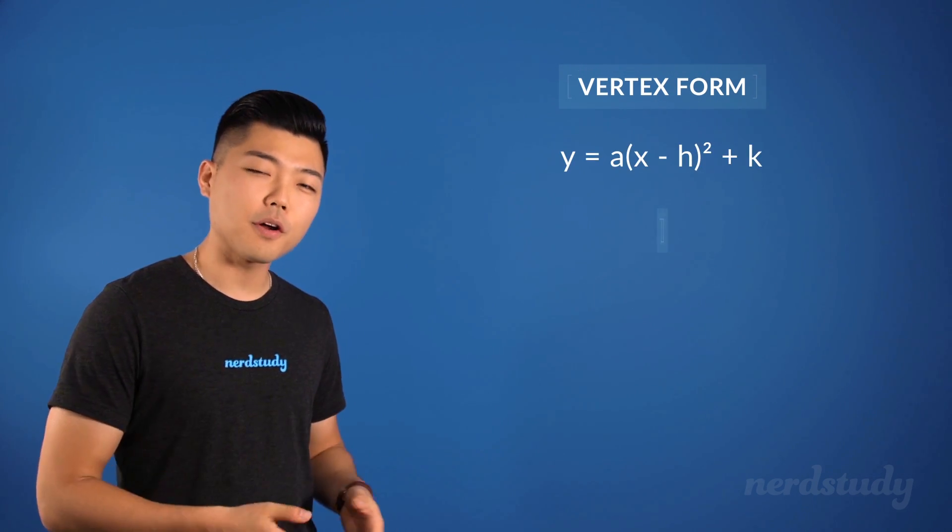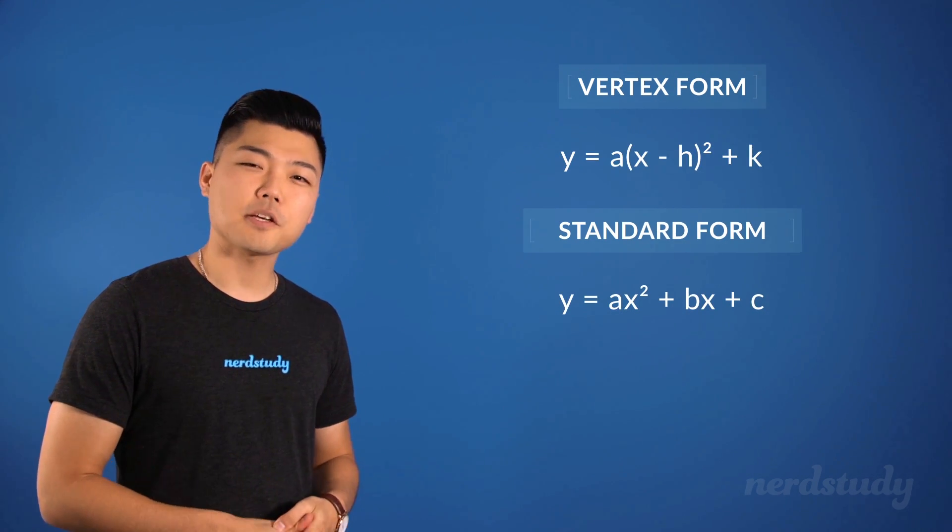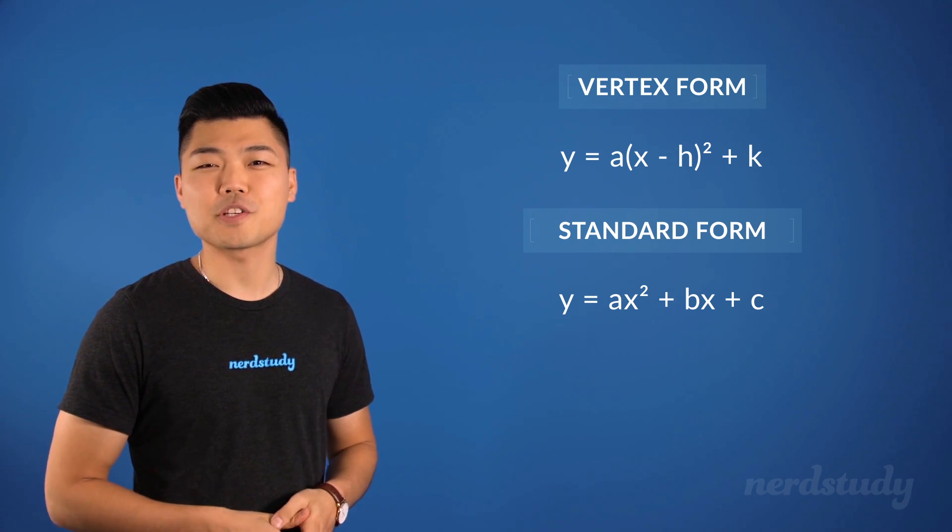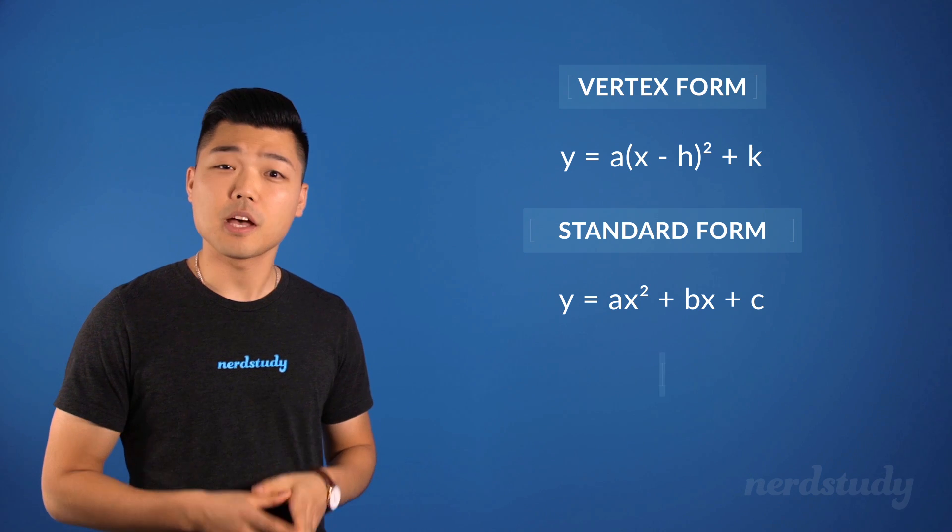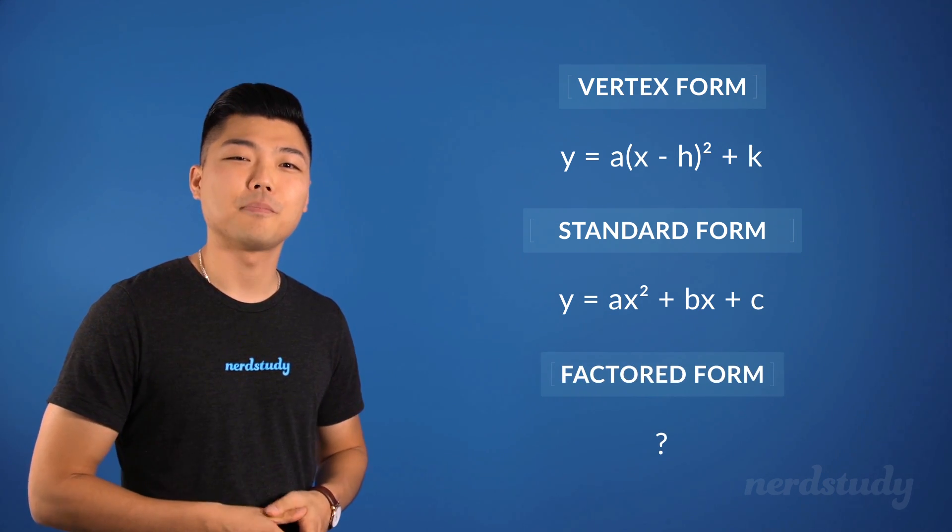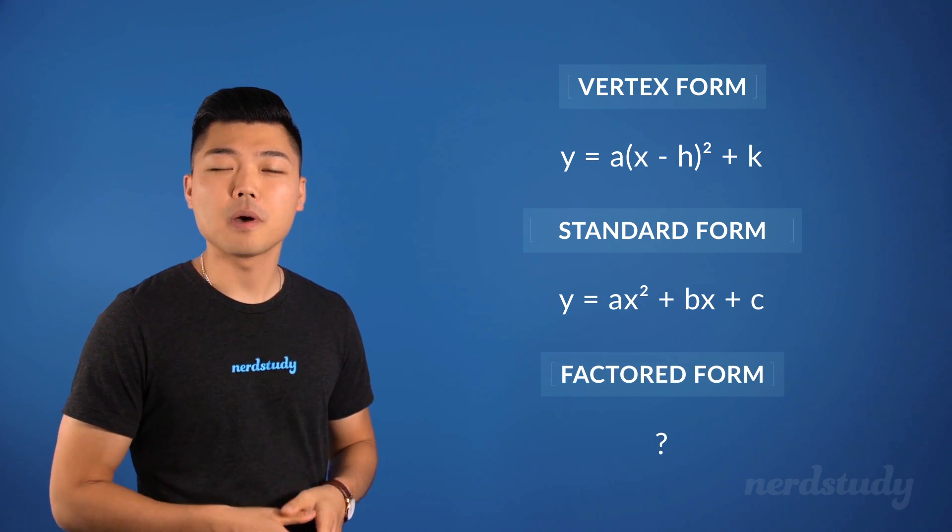Similar to how a quadratic equation can be written in either the vertex form or the standard form, sometimes the quadratic equation can be written in yet another form known as the factored form. Now the factored form looks like this.